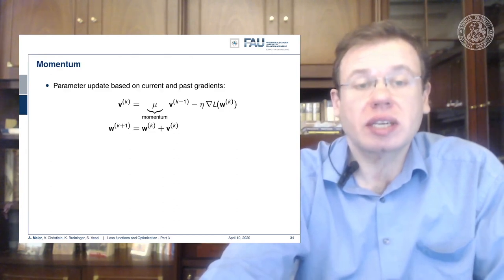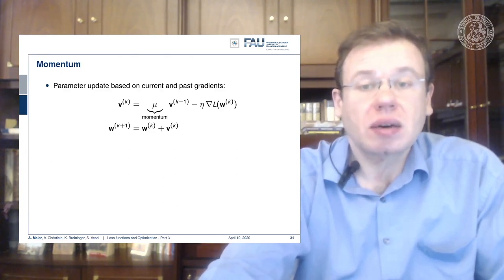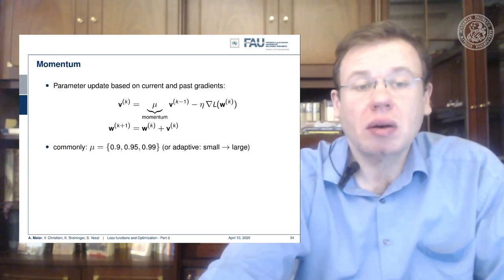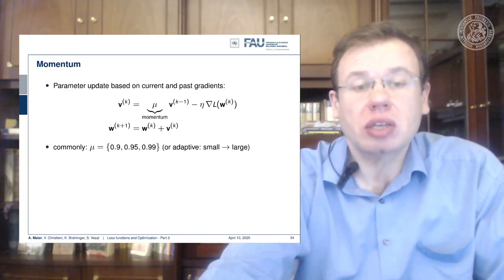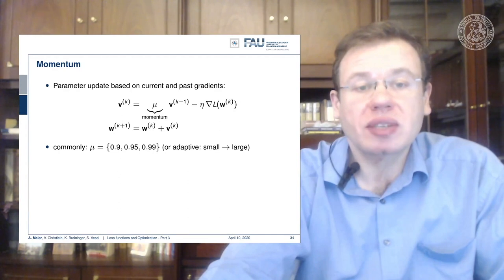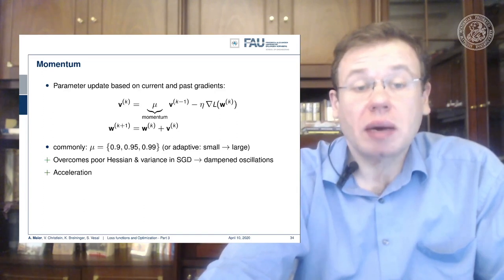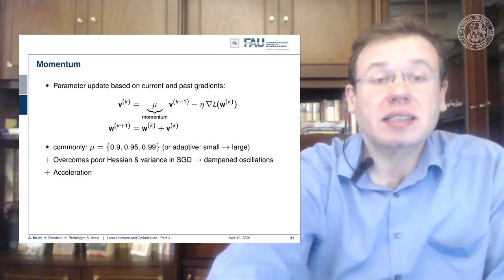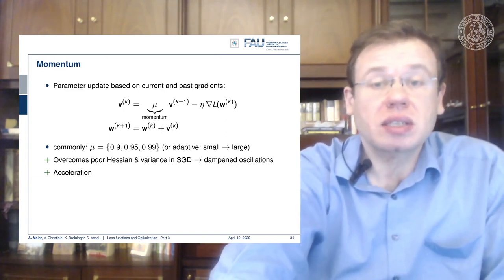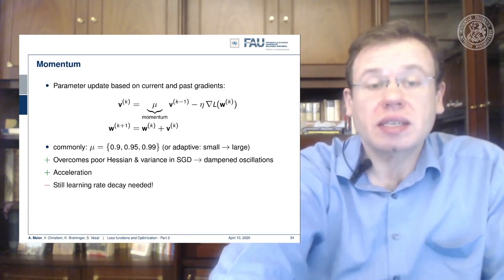Instead of picking just the gradient direction, typical choices for mu are 0.9, 0.95, or 0.99 — or you can even adapt them from small to large to pay more emphasis on previous gradient directions. This overcomes poor Hessians and variance in stochastic gradient descent, leads to damped oscillations, and accelerates the optimization procedure. However, we still need the learning rate decay — this doesn't solve the automatic adjustment of ETA.